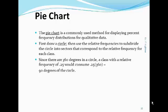Pie chart. A pie chart is commonly used to display percent frequency distributions for qualitative data. In order to draw a pie chart, we begin by drawing a circle. We then use the relative frequencies to subdivide the circle into sectors that correspond to the relative frequency for each class.